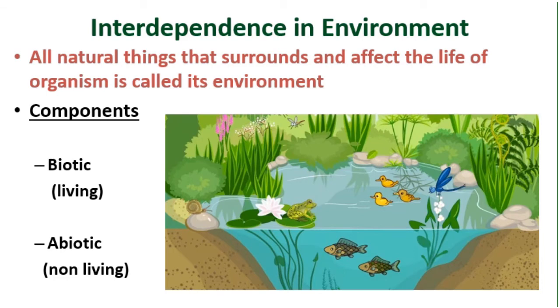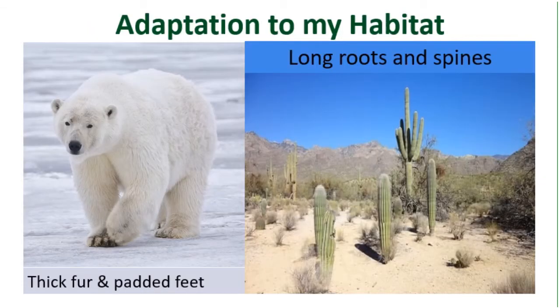The natural environment of an organism, i.e., the place that it lives in, is called its habitat — or in other words, its home. Animals and plants adjust themselves to live in their habitats. This is known as adaptation.